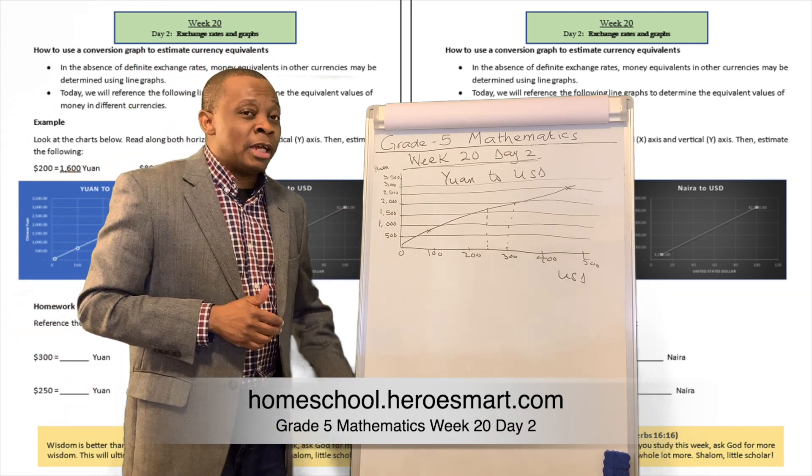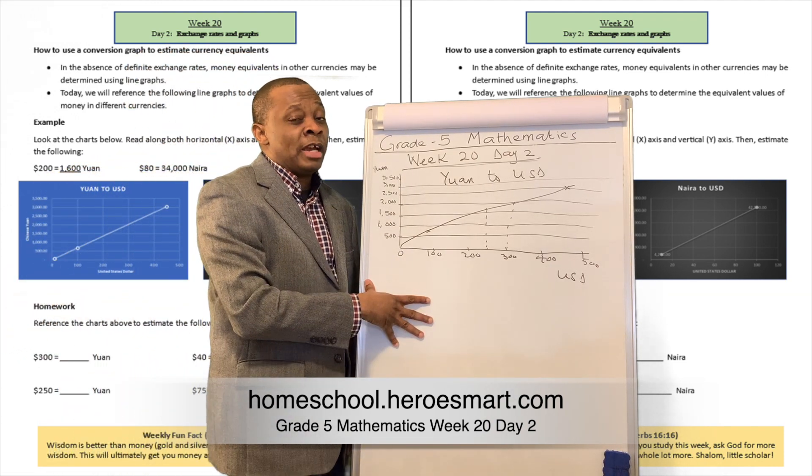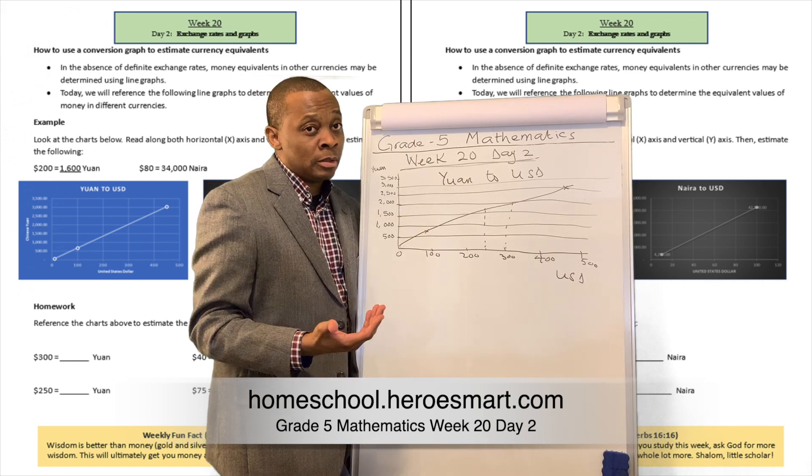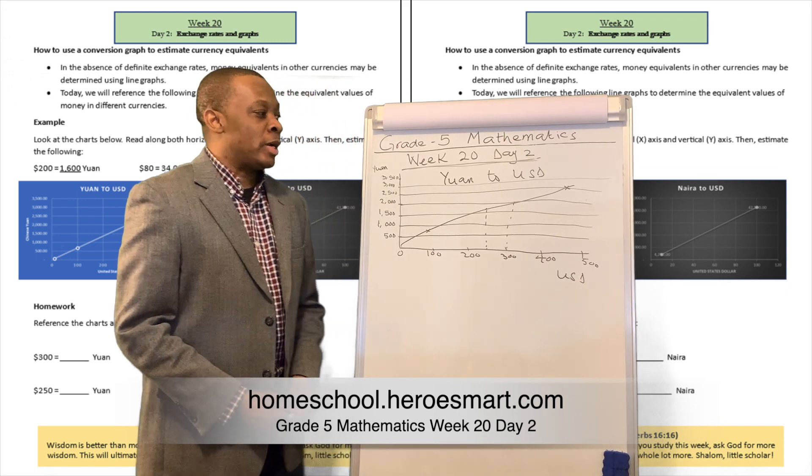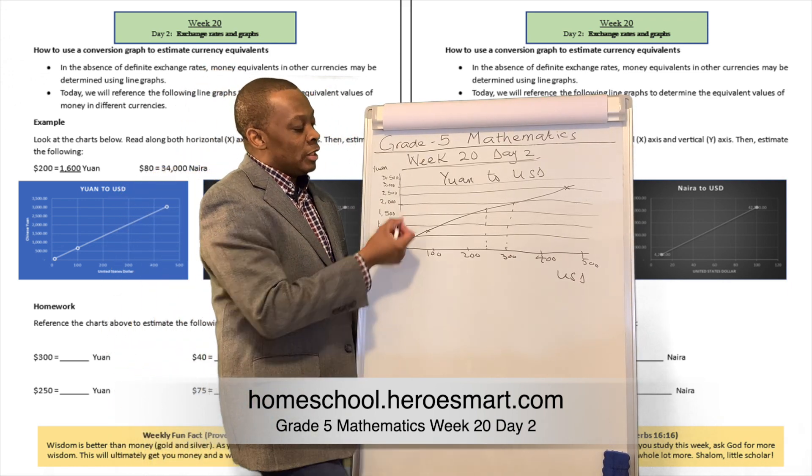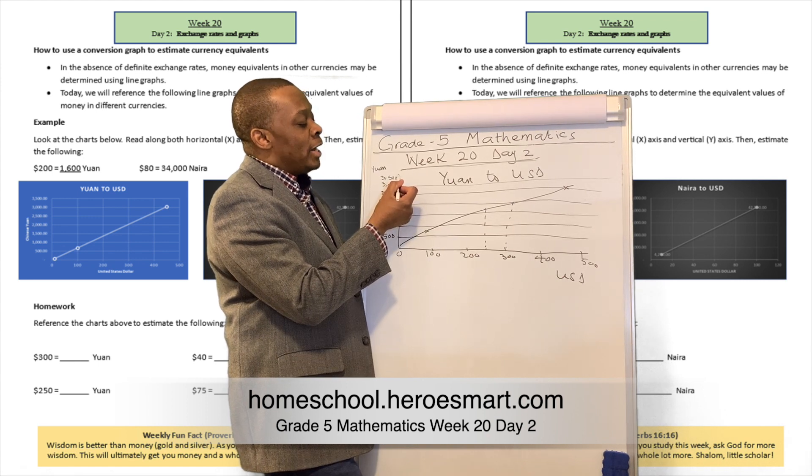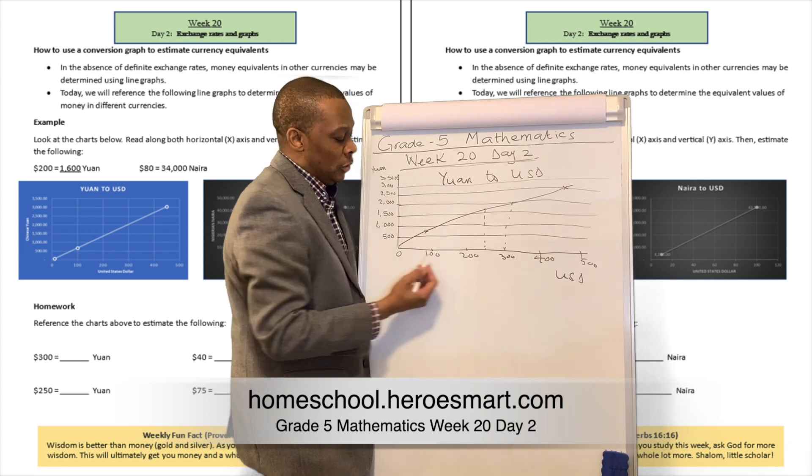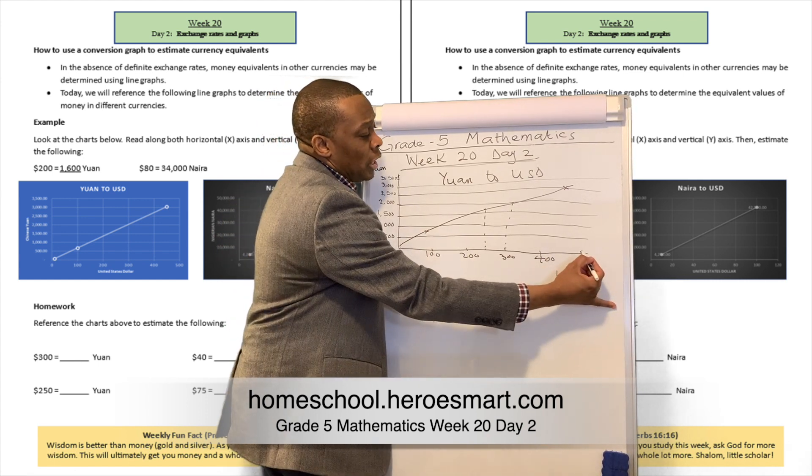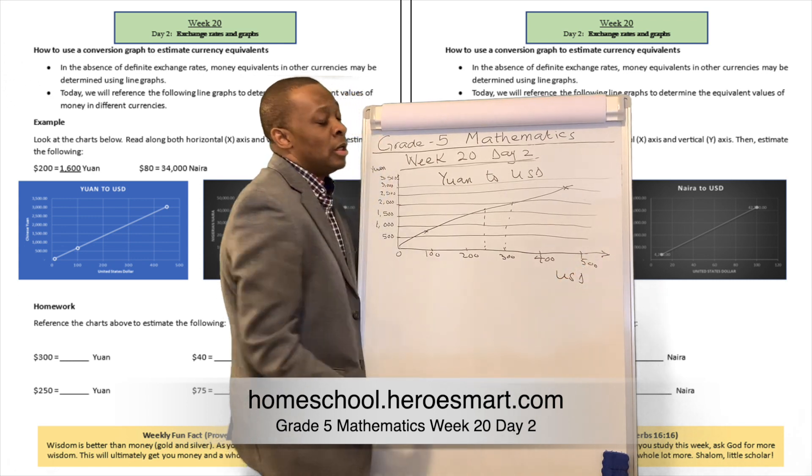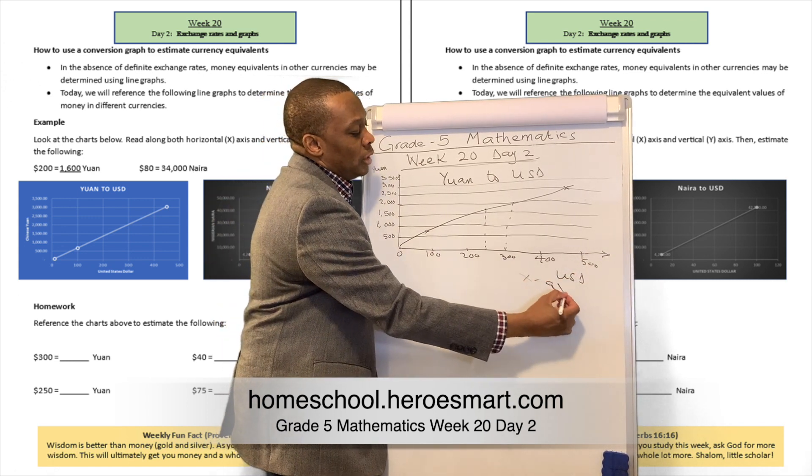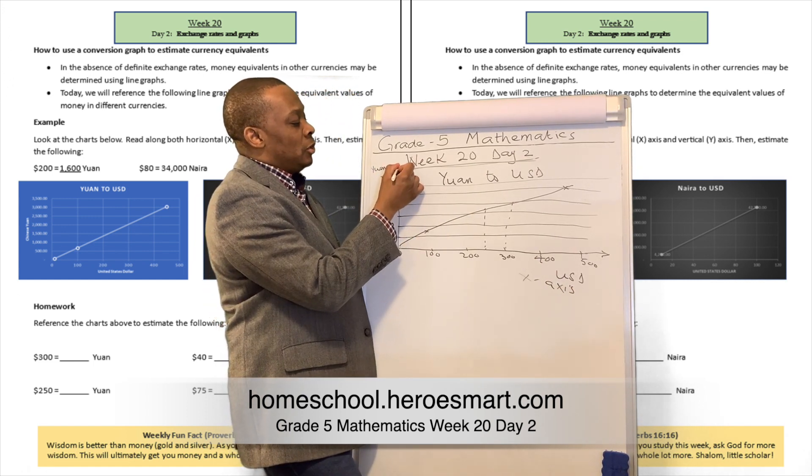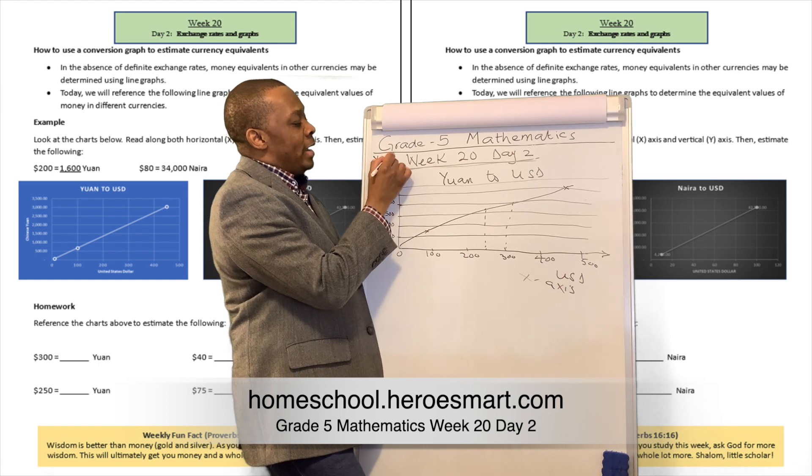There are going to be times that you are given a graph like this and they're going to tell you what is the worth of this money in another currency. For example, the graph I'm showing on the board right now is a graph that computes the worth of the Chinese yuan currency to the United States dollars. You're going to see the United States dollars on the horizontal axis or the x-axis, and then the Chinese currency, which is yuan, on the y-axis.